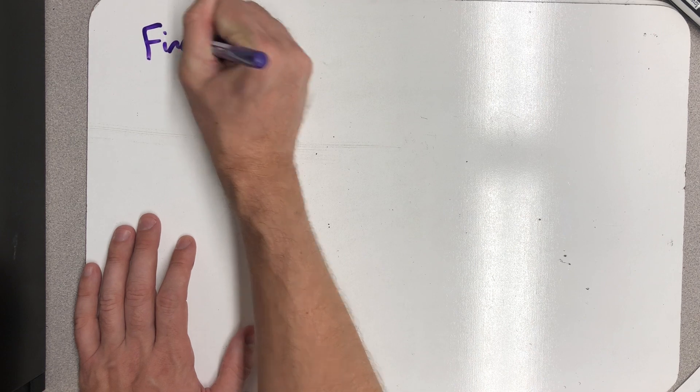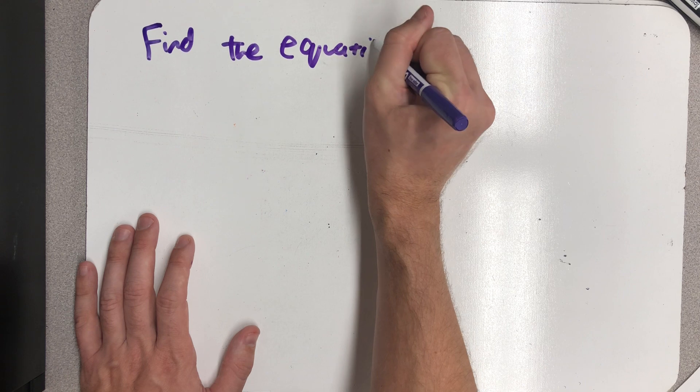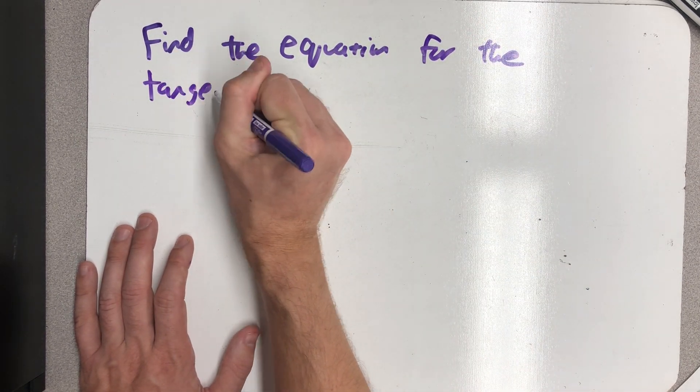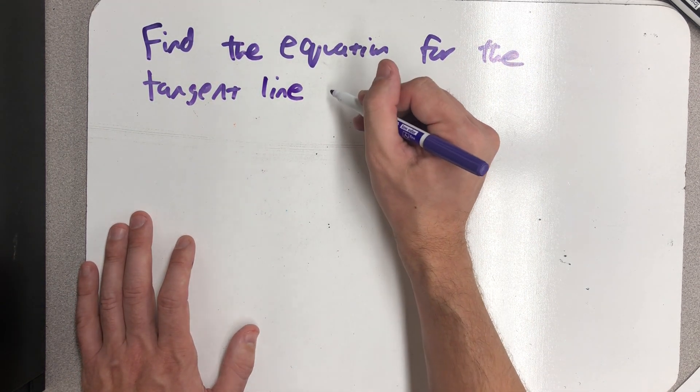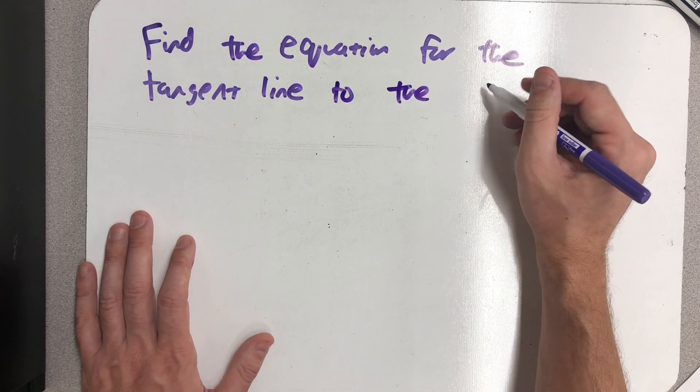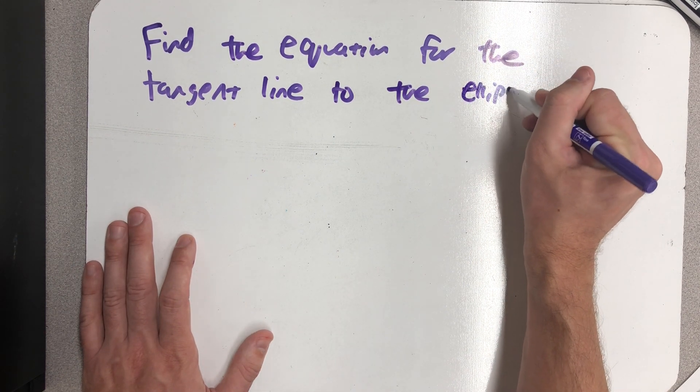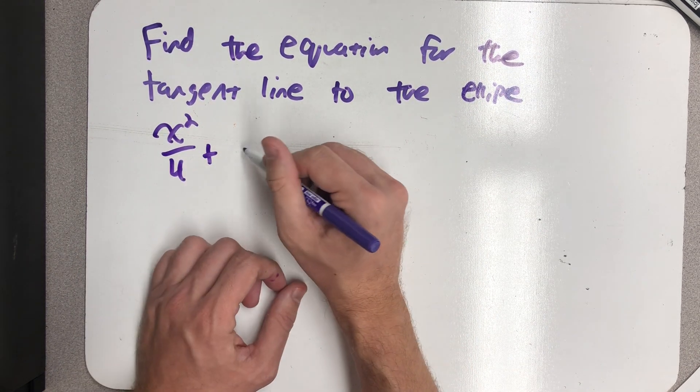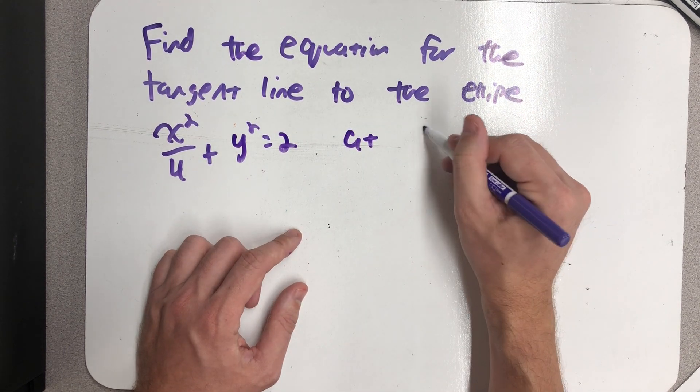Find the equation for the tangent line to the ellipse x² over 4 plus y² equals 2 at the point (2,1).